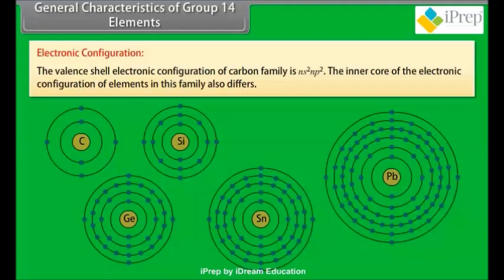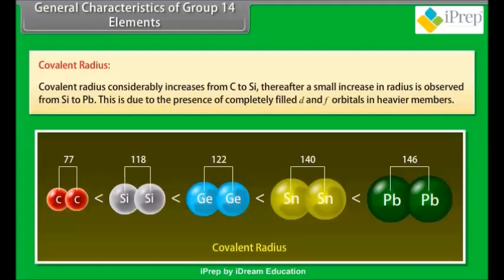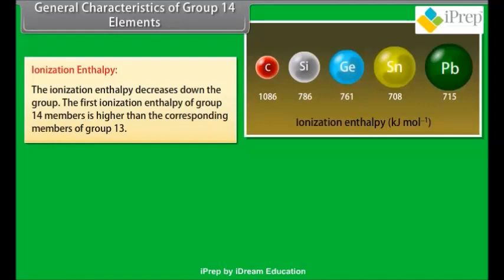General characteristics of group 14 elements. Electronic configuration: the valency shell electronic configuration of the carbon family is NS2 NP2. The inner core of the electronic configuration of elements in this family also differs. Covalent radius: covalent radius considerably increases from carbon to silicon. Thereafter, a small increase in radius is observed from silicon to lead. This is due to the presence of completely filled D and F orbitals in heavier members. Ionization enthalpy: the ionization enthalpy decreases down the group. The first ionization enthalpy of group 14 members is higher than the corresponding members of group 13.